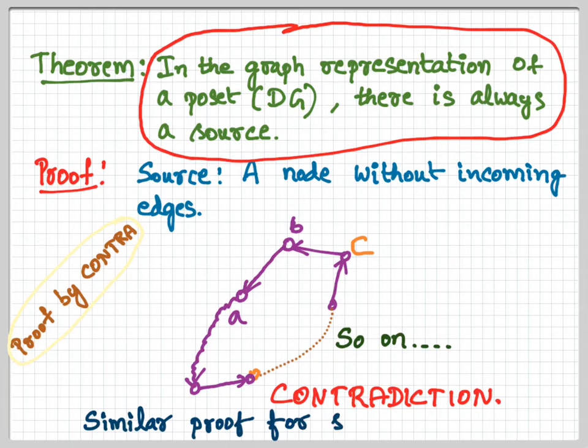Please observe that a similar proof holds good for a sink. What do you mean by a sink? Source means there are no incoming nodes. A sink means there are no outgoing nodes. You can also show that in a partially ordered set, you will always have one sink. The proof is exactly on the same lines as that of source.